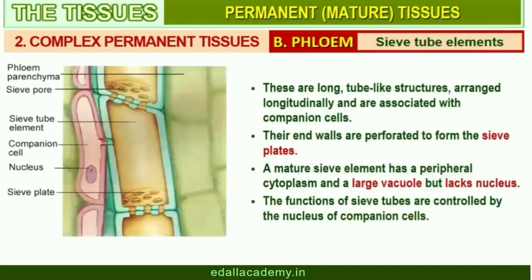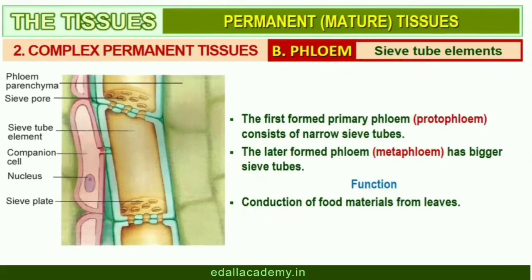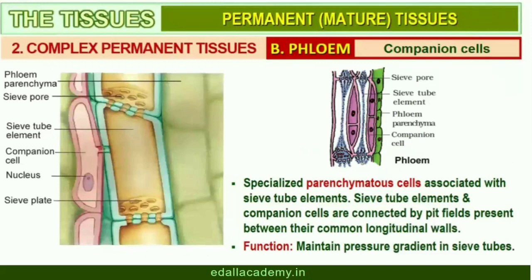Sieve tube elements are long, tube-like structures, arranged longitudinally and associated with companion cells. Their end walls are perforated in a sieve-like manner to form the sieve plates. A mature sieve element possesses peripheral cytoplasm and a large vacuole but lacks a nucleus. The functions of sieve tubes are controlled by the nucleus of companion cells. The companion cells are specialized parenchymatous cells closely associated with sieve tube elements, connected by pit fields between their common longitudinal walls. The companion cells help in maintaining the pressure gradient in the sieve tubes.